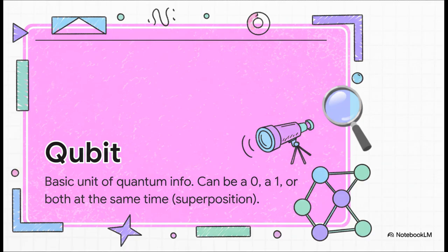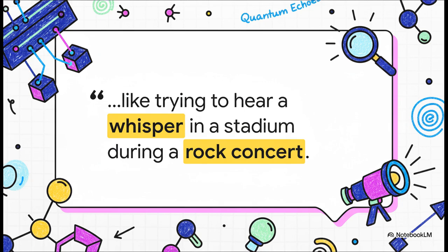But here's the catch. That quantum state is unbelievably fragile. I mean, the tiniest little disturbance can throw the whole thing into chaos and wreck the calculation. And this analogy just nails it. The actual, useful quantum signal you're trying to listen for? It's that tiny whisper. But it's completely buried under this deafening roar of errors and noise. Trying to pull meaningful data out of that mess has been one of the single biggest roadblocks in all of quantum computing.